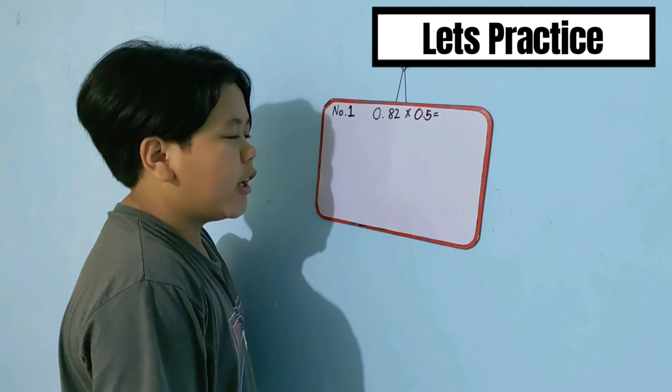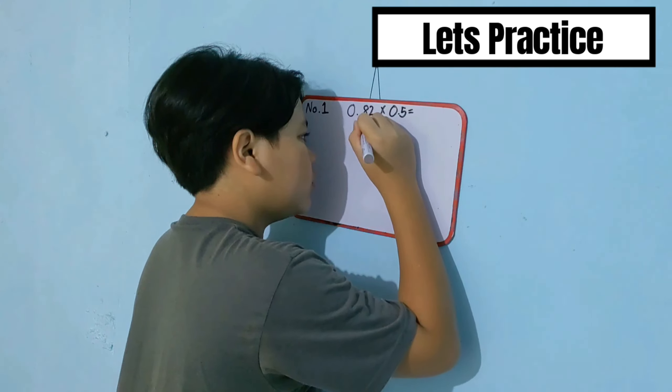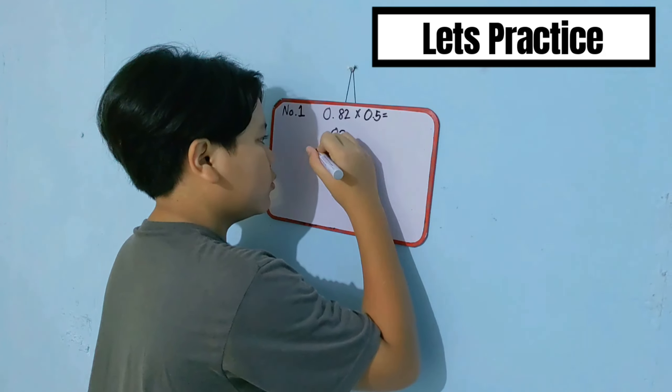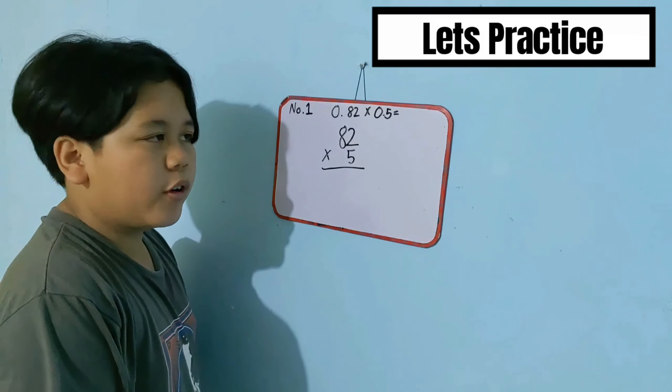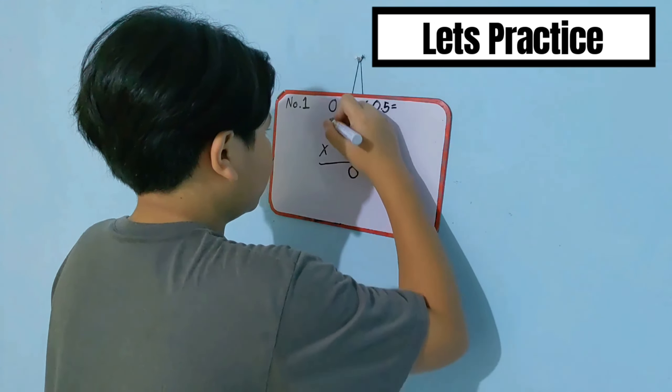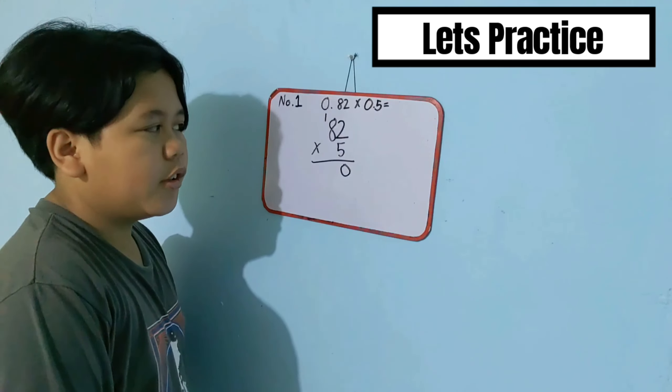Now, write the number without decimals and then multiply. 5 times 2 is equal to 10. 5 times 8 is equal to 40 plus 1.